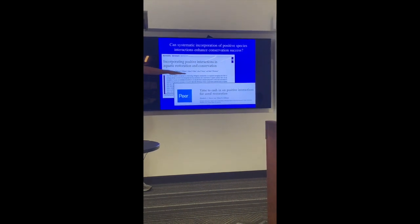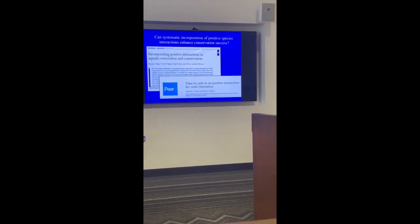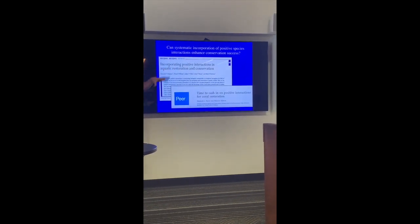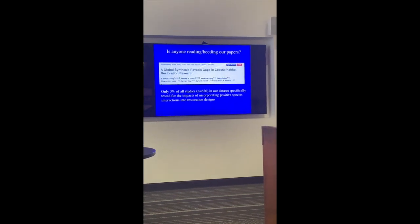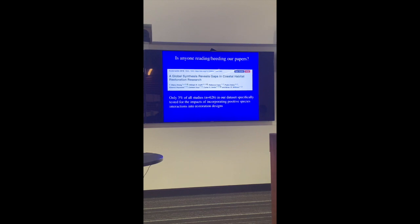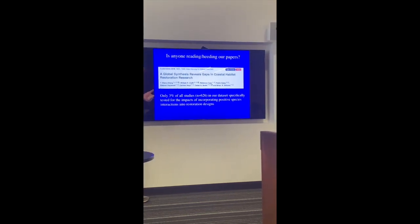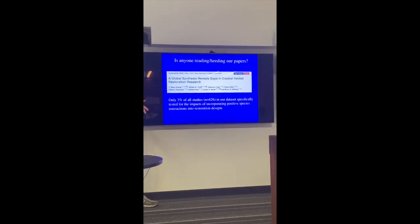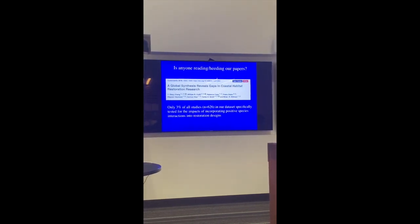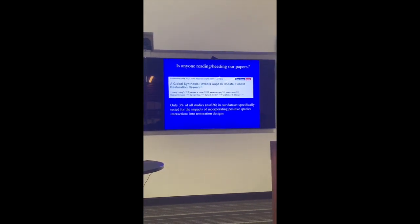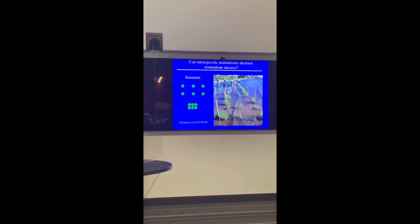Positive interactions are important. What if we systematically change our view and say, let's cash in on positive interactions? Here's a flow diagram. We've done about five or six of these papers for system-specific ones for corals, coastal wetlands, mangroves. We've done general ones as well. And then we continue to go out there and it doesn't seem like designs are changing in those environments. We asked, is anyone reading our papers or listening to what we're talking about? It turns out only three restoration ecology studies, only 3% of all studies in our data set looking at oyster reefs, seagrasses, and salt marshes specifically tested for the impacts of positive species interactions.